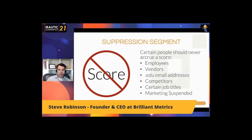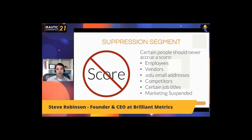I mentioned other ways to keep employees from coming up as marketing qualified leads. I strongly recommend putting a suppression segment in place — a segment you never allow to be sent to sales. Put your employees, vendors, anyone with an EDU email address (unless you sell to education), because those are often students doing research. Competitors, certain lower-level job titles that aren't worth calling just because they crossed a scoring threshold. And importantly, anyone flagged as marketing suspended — not worth marketing to, so not worth selling to either.